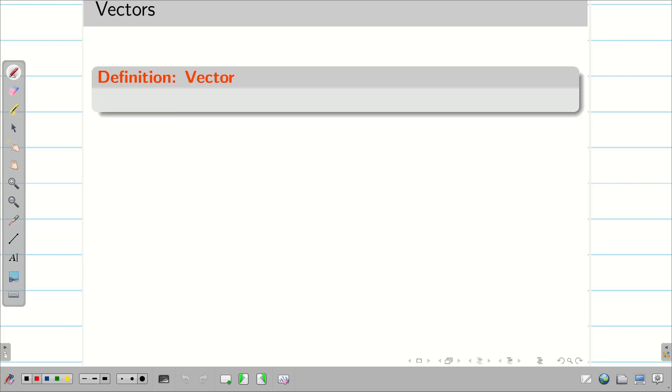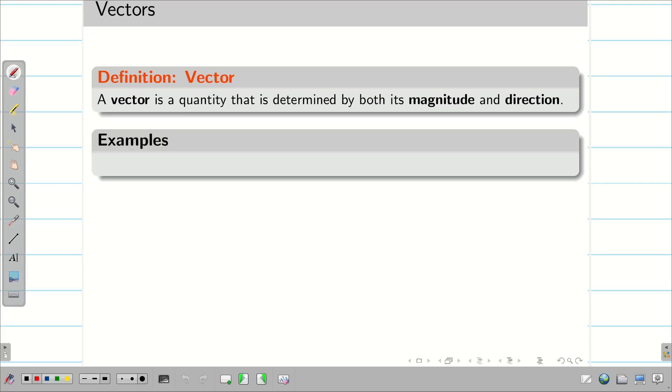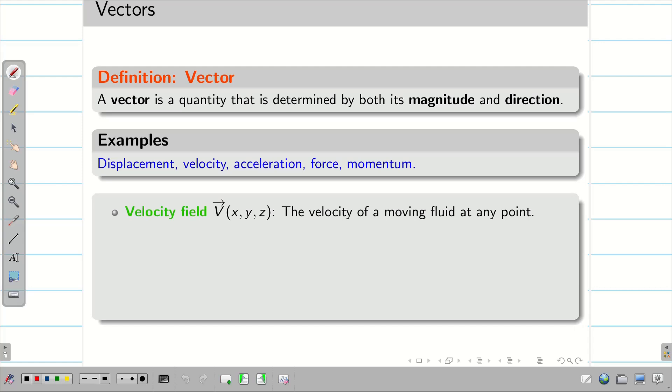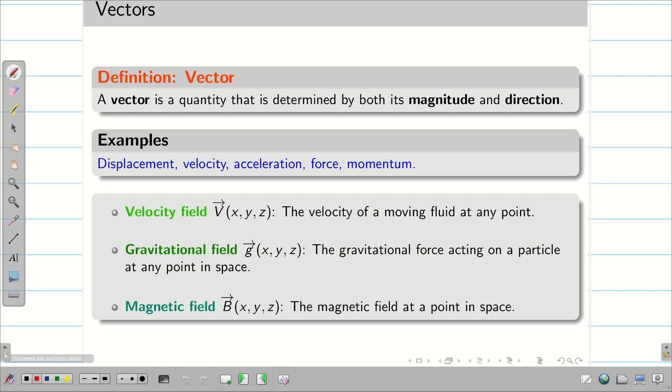While on the other side, a vector is a quantity that is determined by both magnitude and direction. For example, force, momentum, acceleration, velocity, displacement, all these things need both magnitude as well as direction. The velocity of a moving fluid, we need a direction, so it is going to be a vector. Similarly, gravitational field, magnetic field, all are vector quantities.